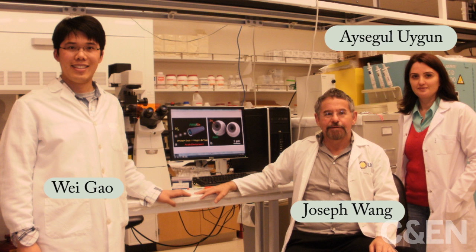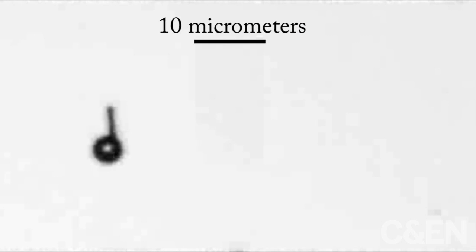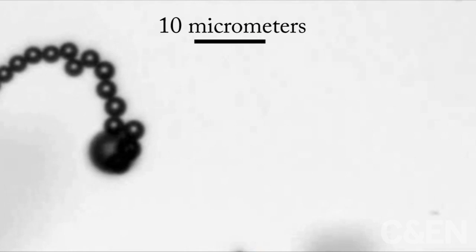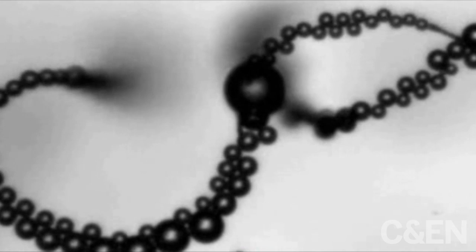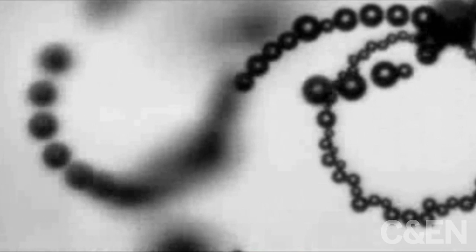The group, led by nano-engineer Joseph Wang, has developed a micro-rocket that uses acid as a fuel. Previous micro-rockets from Wang's group and others ran on hydrogen peroxide, which had to be added to the solution the rocket was zooming through.